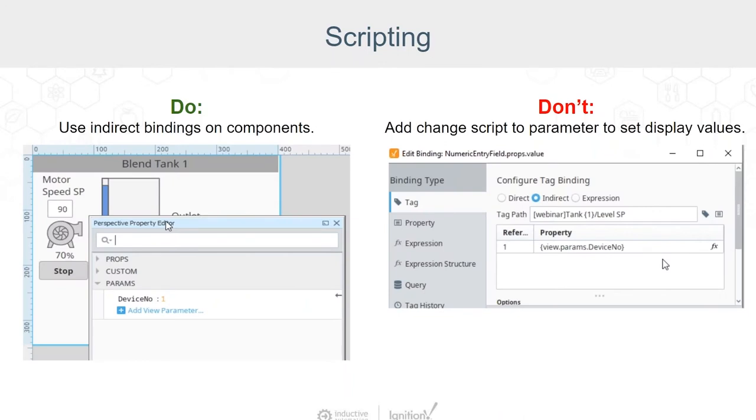Now, here's a common mistake. A user is not familiar with binding, so they're going to add a parameter to a viewer or a window. And then if that parameter changes, they're going to have a script and that script is going to go around and it's going to find all the components that use that parameter and it's going to reset all the values. So this is overly complex and it's difficult to troubleshoot.